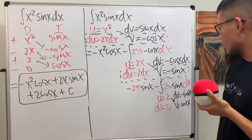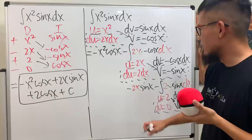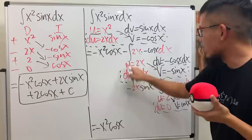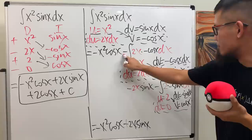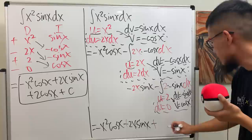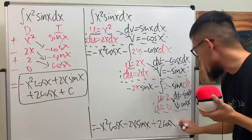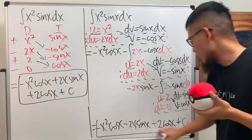So all in all, the first product gives negative x squared cosine x, this becomes minus, minus — so plus 2x cosine x — wait, plus 2x sine x. And then the last term: minus, minus becomes a plus, and we have 2 times cosine x, which is just 2 cosine x. And that's exactly what we got from the DI method — the answers match perfectly.